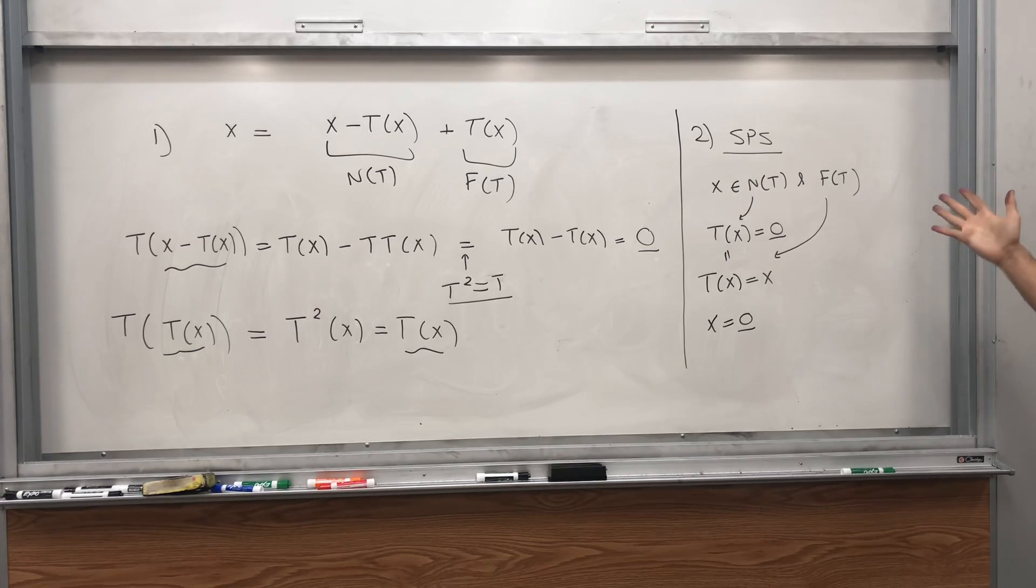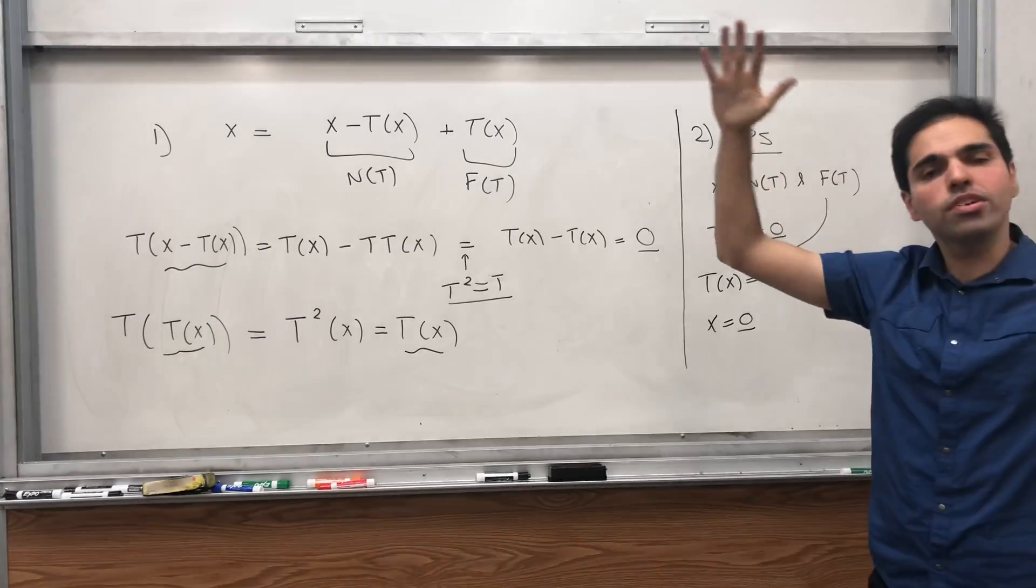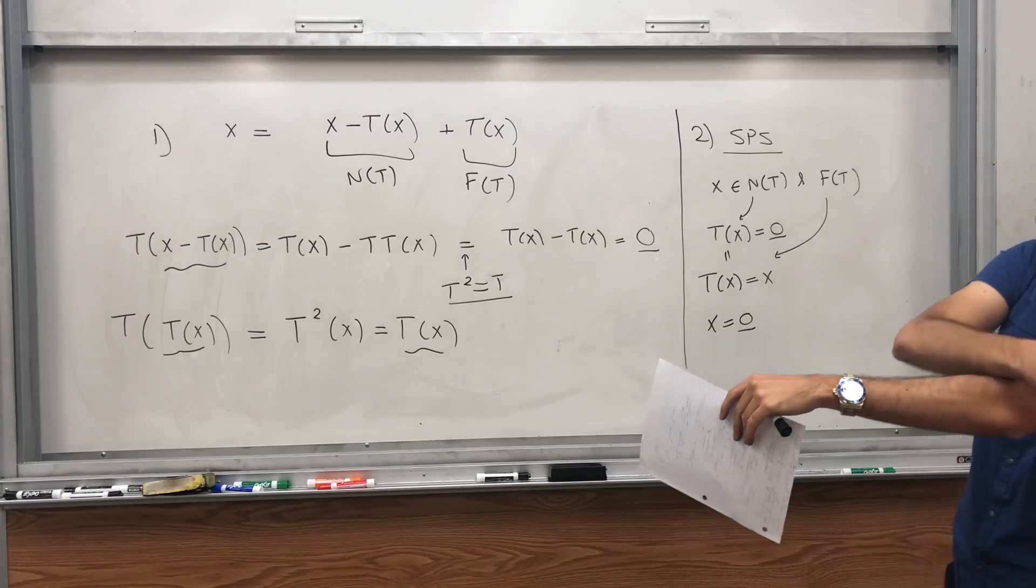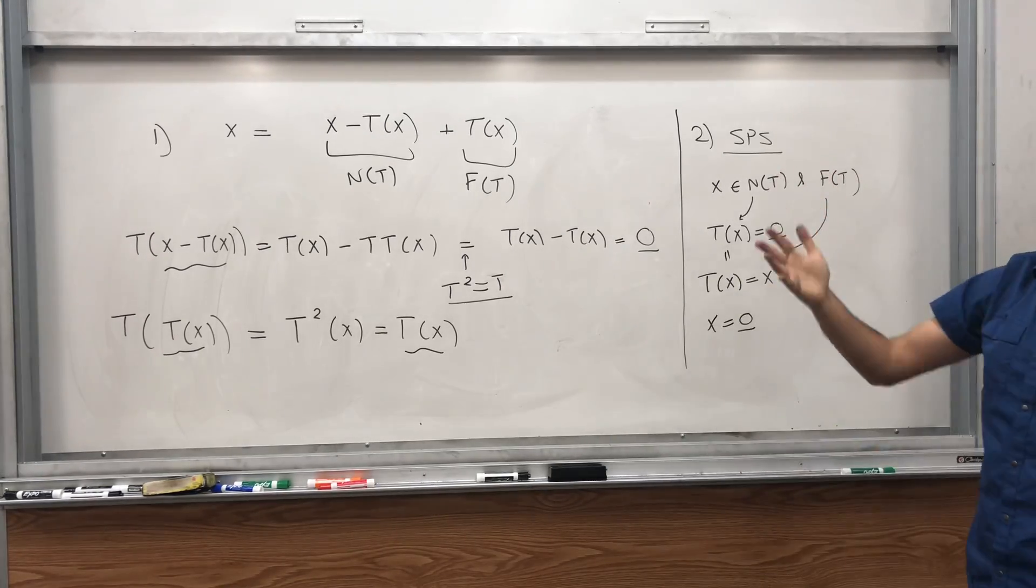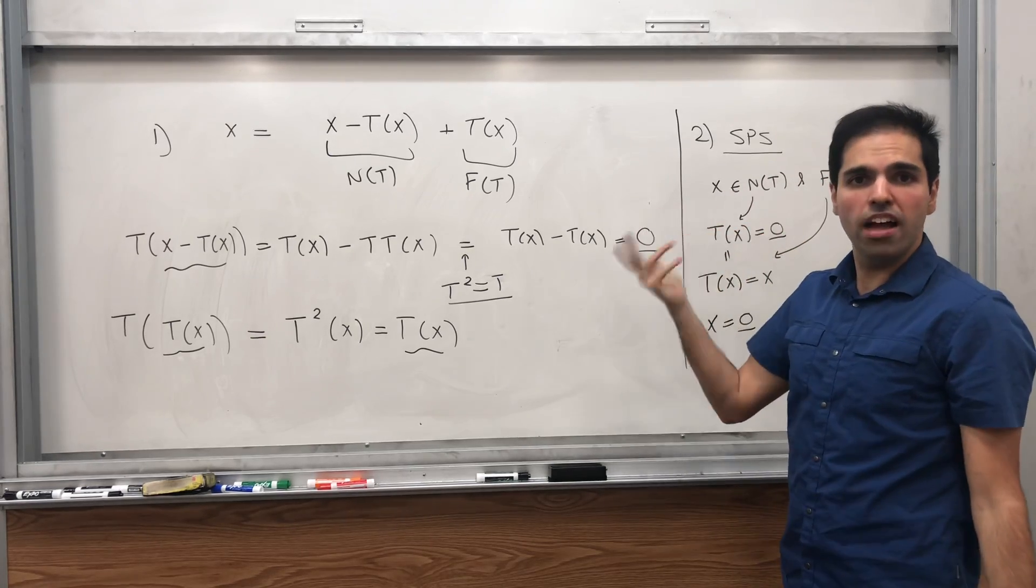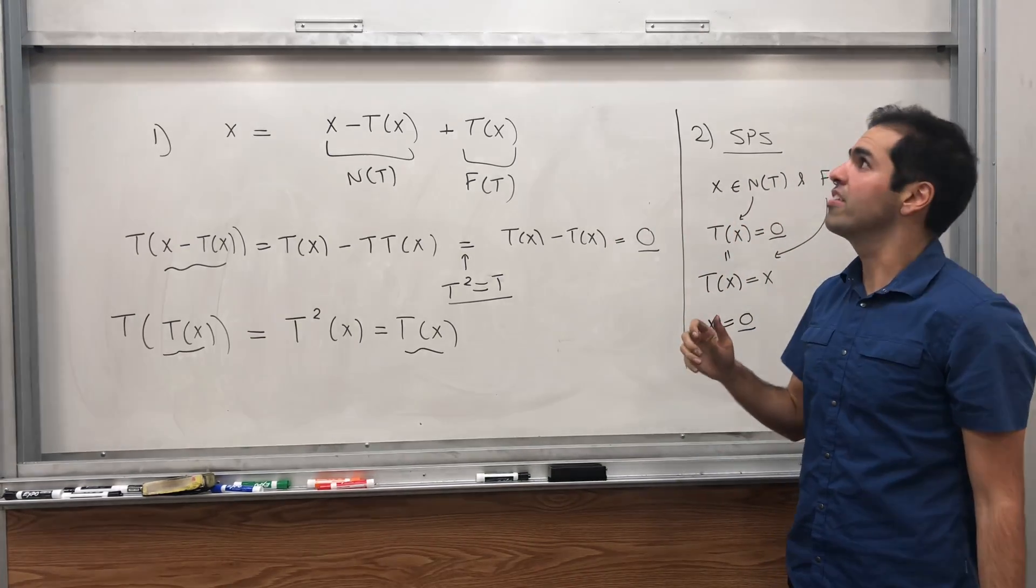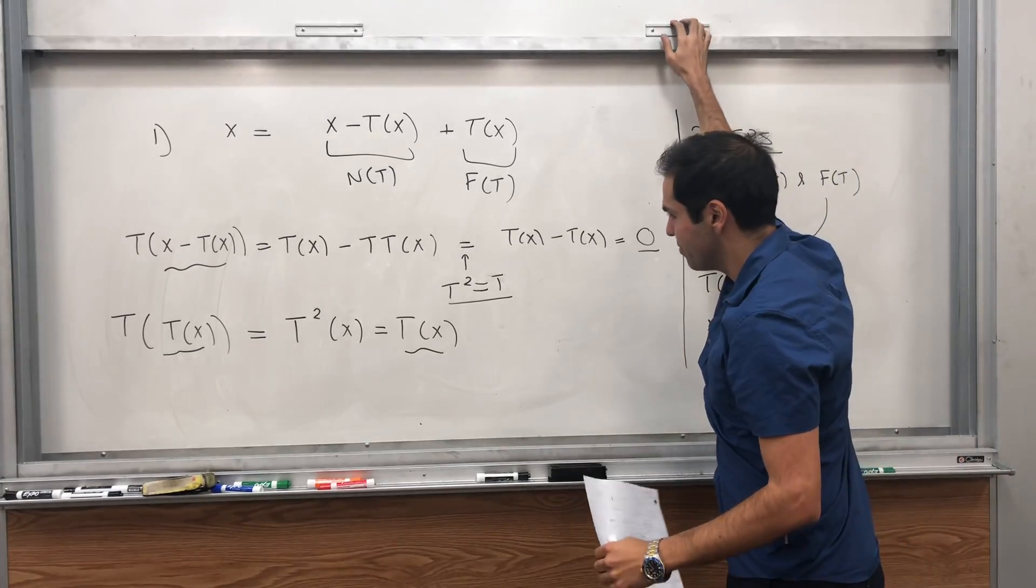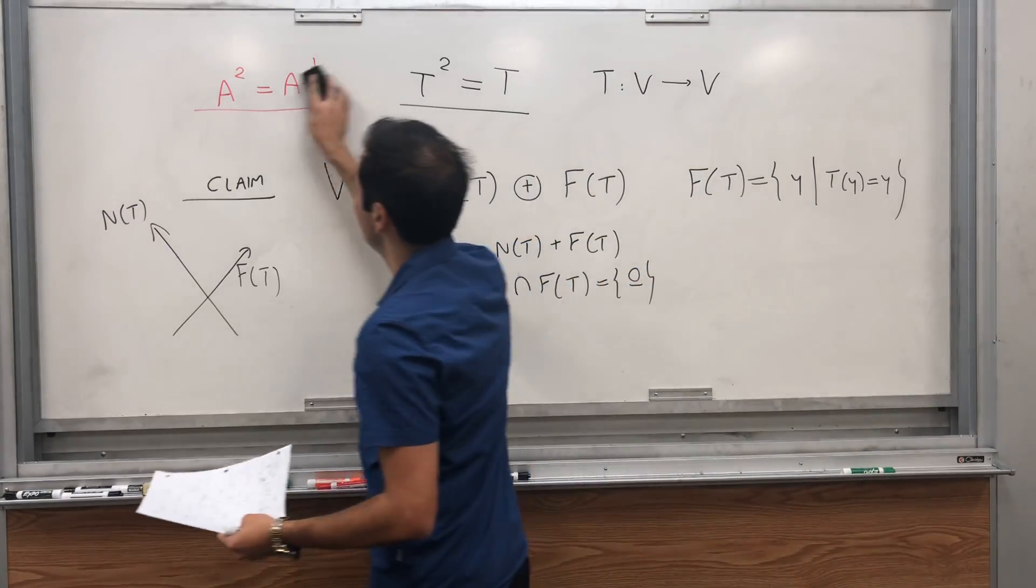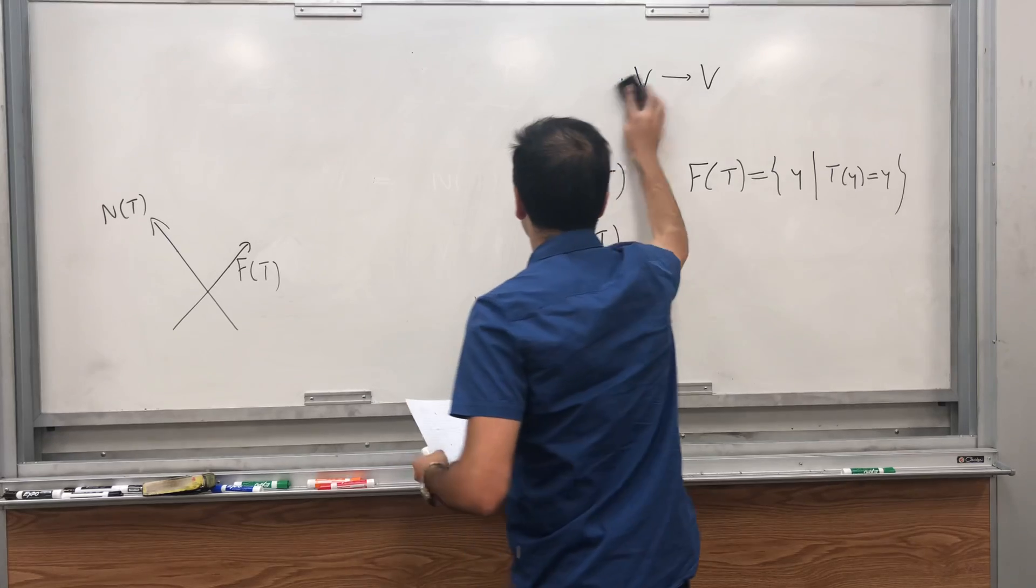Which means precisely that the intersection is not empty. Okay, now we have that. So it's very nice. Basically, your vector space V, you can think of it as having two axes. Let's say in R2. One being the null space. The other one being the fixed point space. Now, let me tell you precisely what T does. It's nothing else other than a projection.